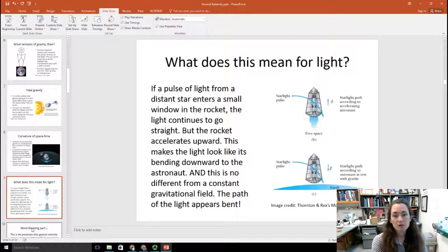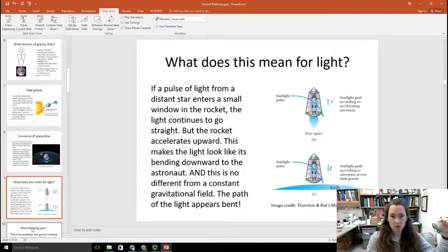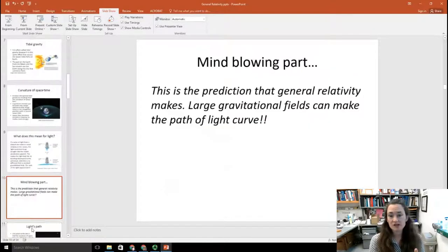Now, what does this mean for light? Well, if a pulse of light from a distant star enters a small window in a rocket that's accelerating at 9.8 meters per second squared through space, then the light continues to go straight, but the rocket would accelerate upward. And this makes the light look like it's bending downward to the astronaut inside. However, according to Einstein's principle of equivalence, this is no different from a constant gravitational field. So what that means is that the light would be bent in the presence of a gravitational field. So this is a prediction that general relativity makes. Large gravitational fields can make the path of light curve. The path of light can be bent if spacetime is curved enough that you can notice the effect.